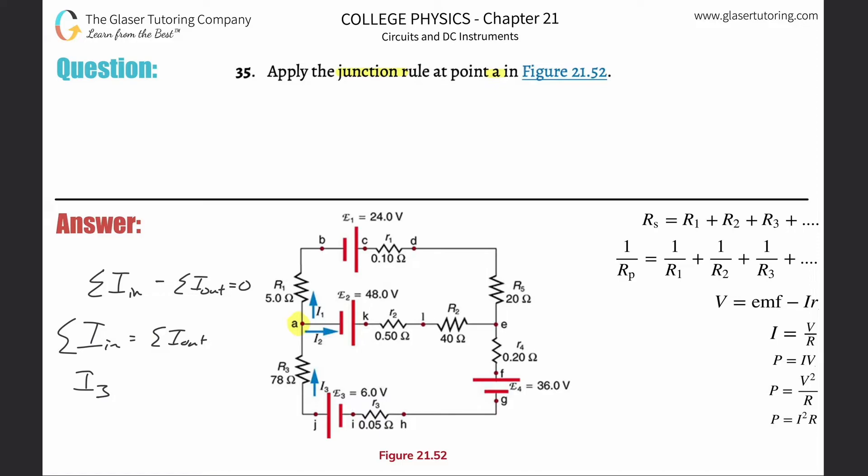So it's just i2 plus i1. You can leave it in this form where i3 has to equal the sum of i2 plus i1.